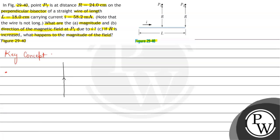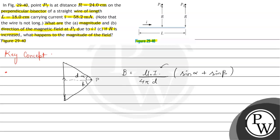Now let's check the magnitude of the magnetic field at a point P, which is at a distance d from the wire. Let's say this angle is alpha and this angle is beta. So the magnitude of magnetic field B is equal to mu naught i upon 4 pi d, into sin alpha plus sin beta. This is the formula for magnetic field at a point at some distance from a straight wire.